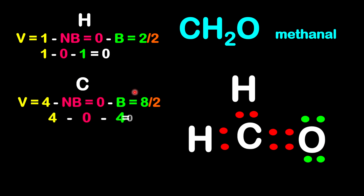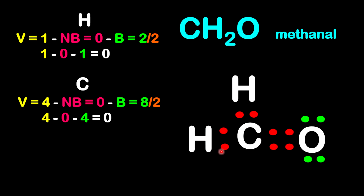Now let's look at carbon. Carbon is in group 4, so there are 4 valence electrons. Based on this structure, we have 0 non-bonding electrons, but we have 8 bonding electrons: 2 here, 2 more, 4, and then 8. So it's 8 divided by 2. So we're going to have 4 minus 0 minus 4 gives 0.